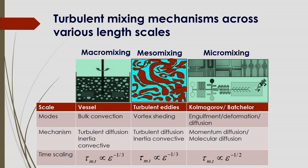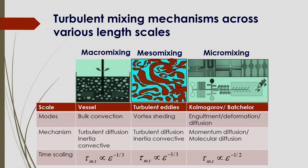Regarding time scales: for macromixing, mixing time is proportional to ε^(−1/3), where ε is energy dissipation rate. For turbulent eddies (mesomixing), mixing time is also proportional to the inverse of the cubic root of energy dissipation. For micromixing, mixing time is inversely proportional to the square root of energy dissipation. Thus, based on this time scale, the dependence of macromixing, mesomixing, and micromixing on energy dissipation can be understood.